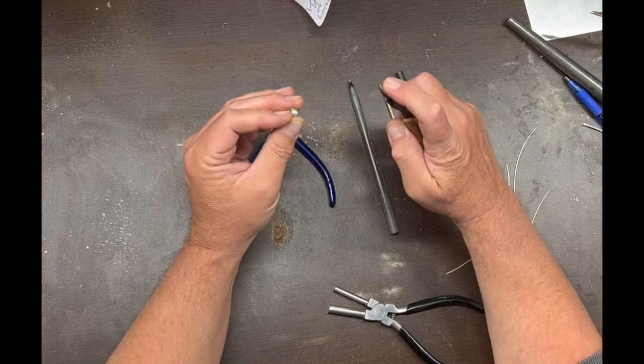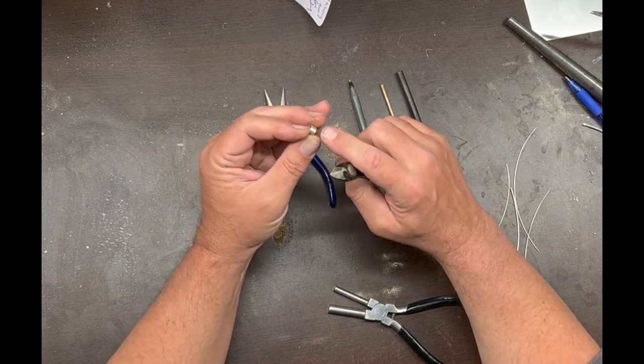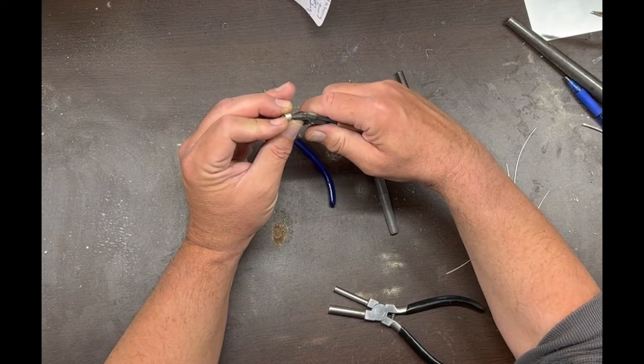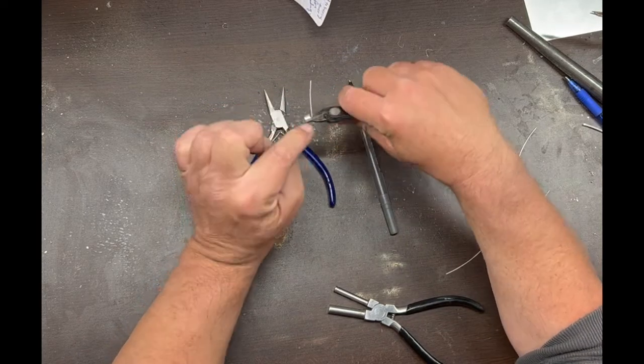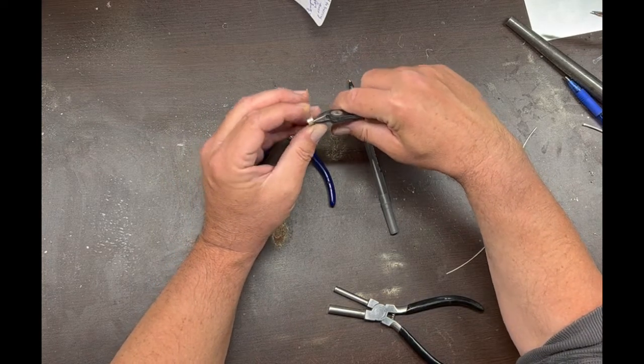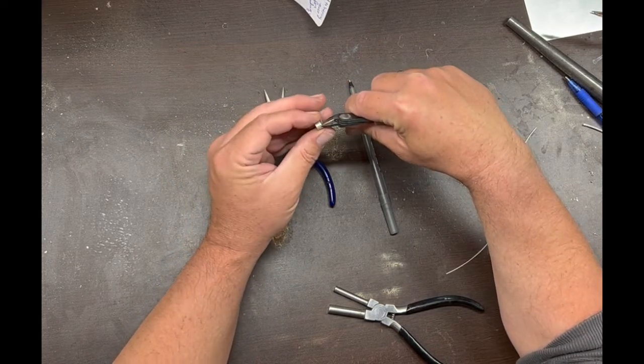Now since it cuts flat on this side and I want to make the ring have as flat an end as I can, I'm going to start with that flat side towards the piece that's going to be my ring, and I'm going to move in just so I'm cutting through one loop of the wire.